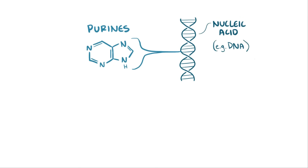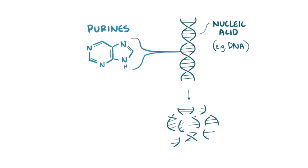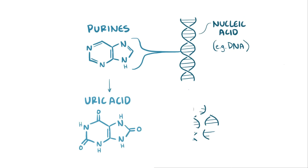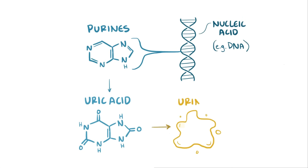When cells, along with the nucleic acid in those cells, are broken down throughout the body, those purines are converted into uric acid, a molecule that can then be filtered out of the blood and excreted in the urine.